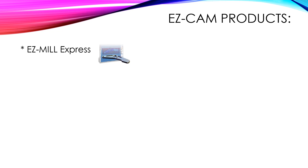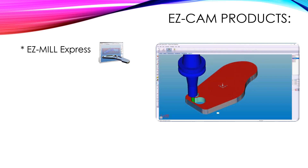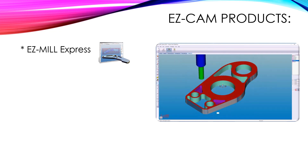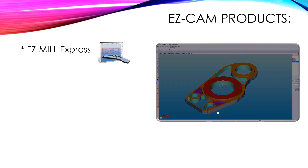EasyMill Express offers 2–3 axis programming. Like all milling products, there is more control in the background so you won't get frustrated. Surprisingly enough, EasyMill Express offers 3D toolpath options at an affordable price.